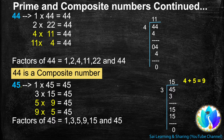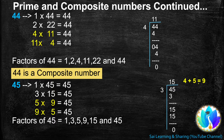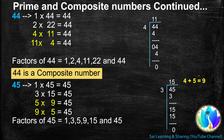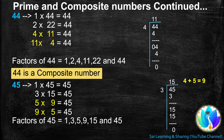45 is a multiple of 3. When we add the digits of 45, 4 plus 5, we get 9. 9 is a multiple of 3, so 45 is a multiple of 3. When we divide 45 by 3, we get 15. 15 is another factor of 45. So, 3s are 15, 45.